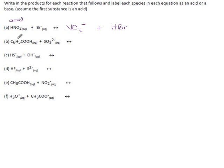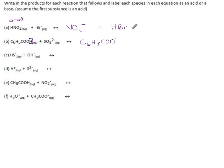C6H5COOH is benzoic acid. This is the hydrogen which will come off. In carboxylic acids, the H in the carboxyl group is the one subject to popping off. So if this acid gives away a hydrogen, we'll be left with C6H5COO — no more H — and the charge drops by 1.